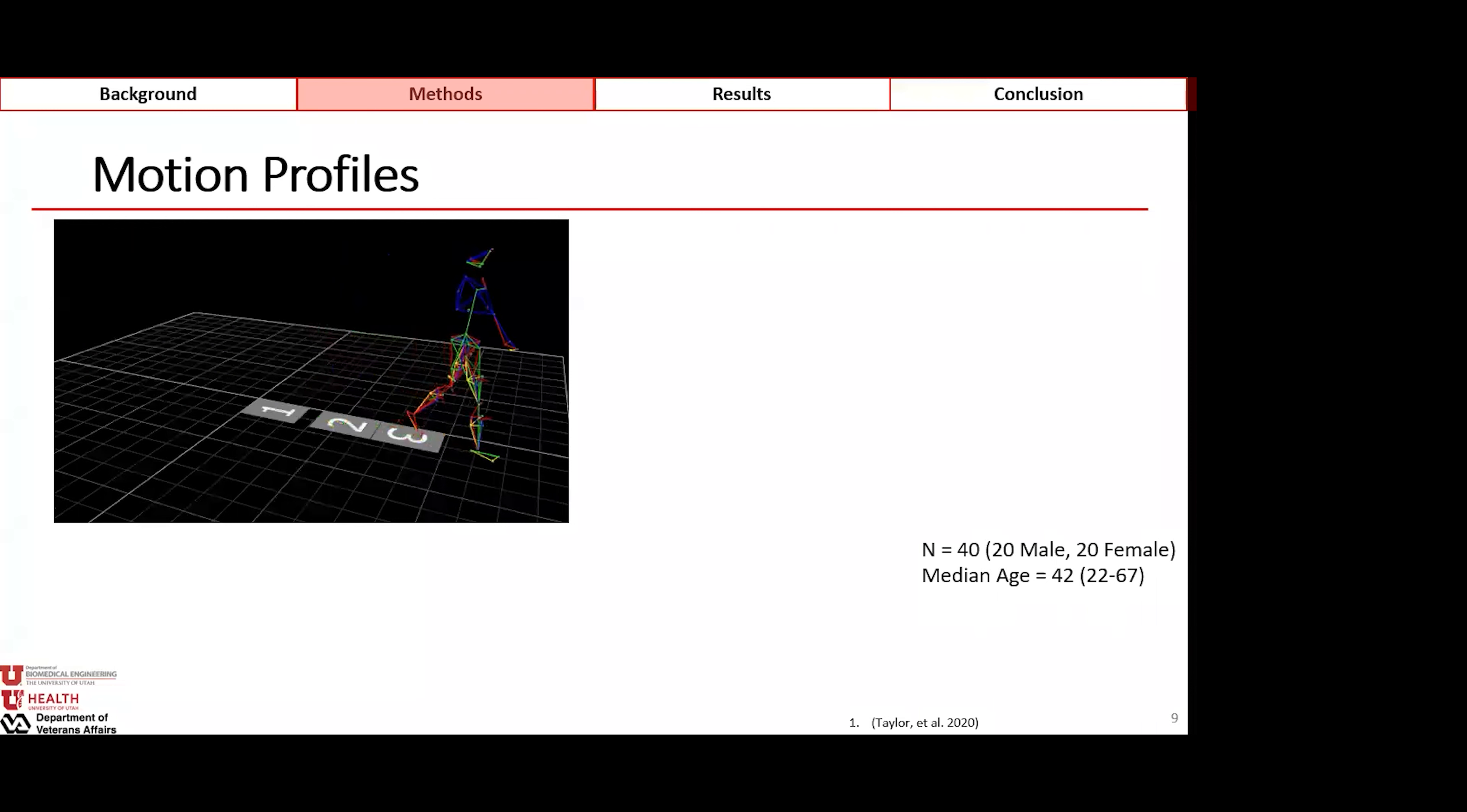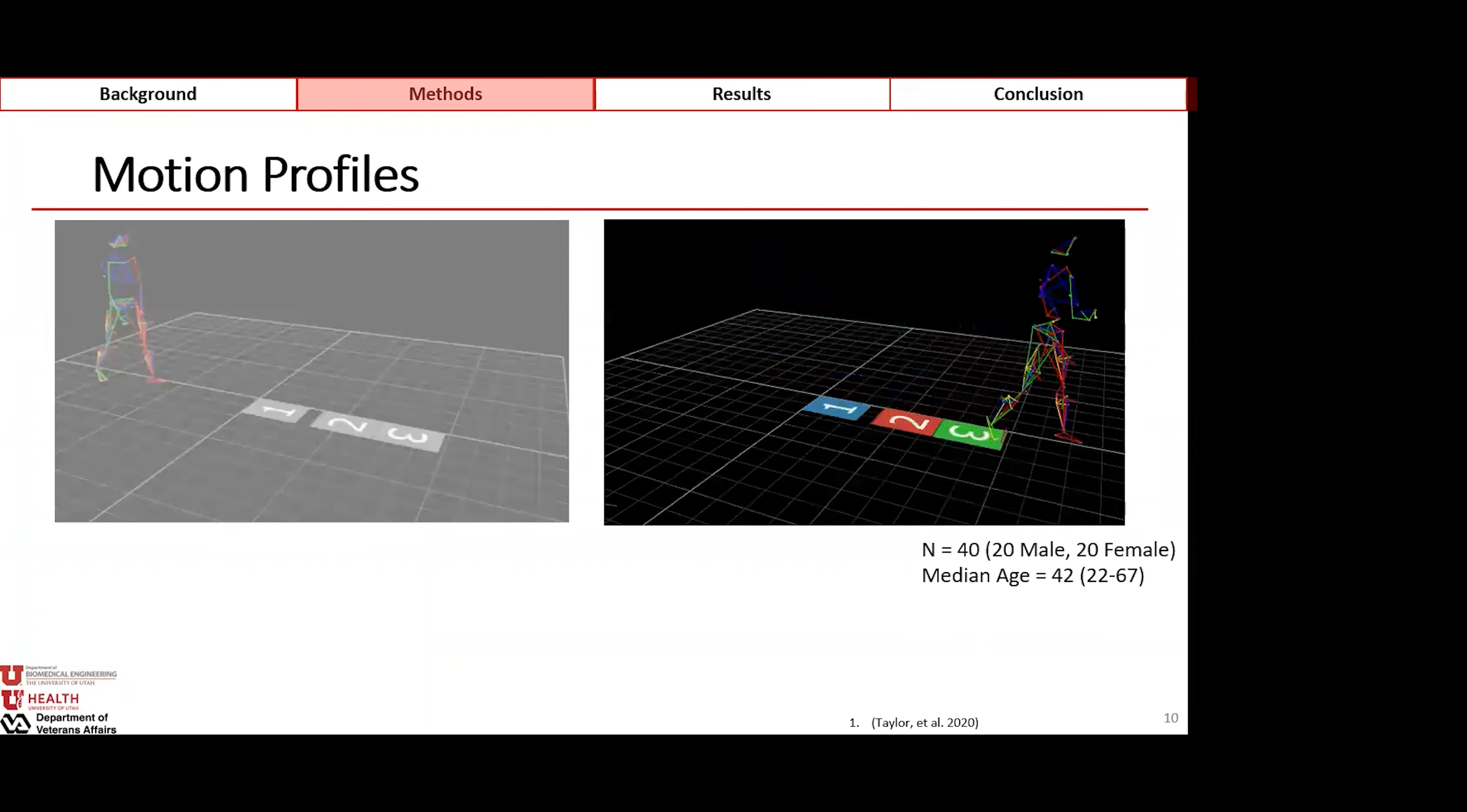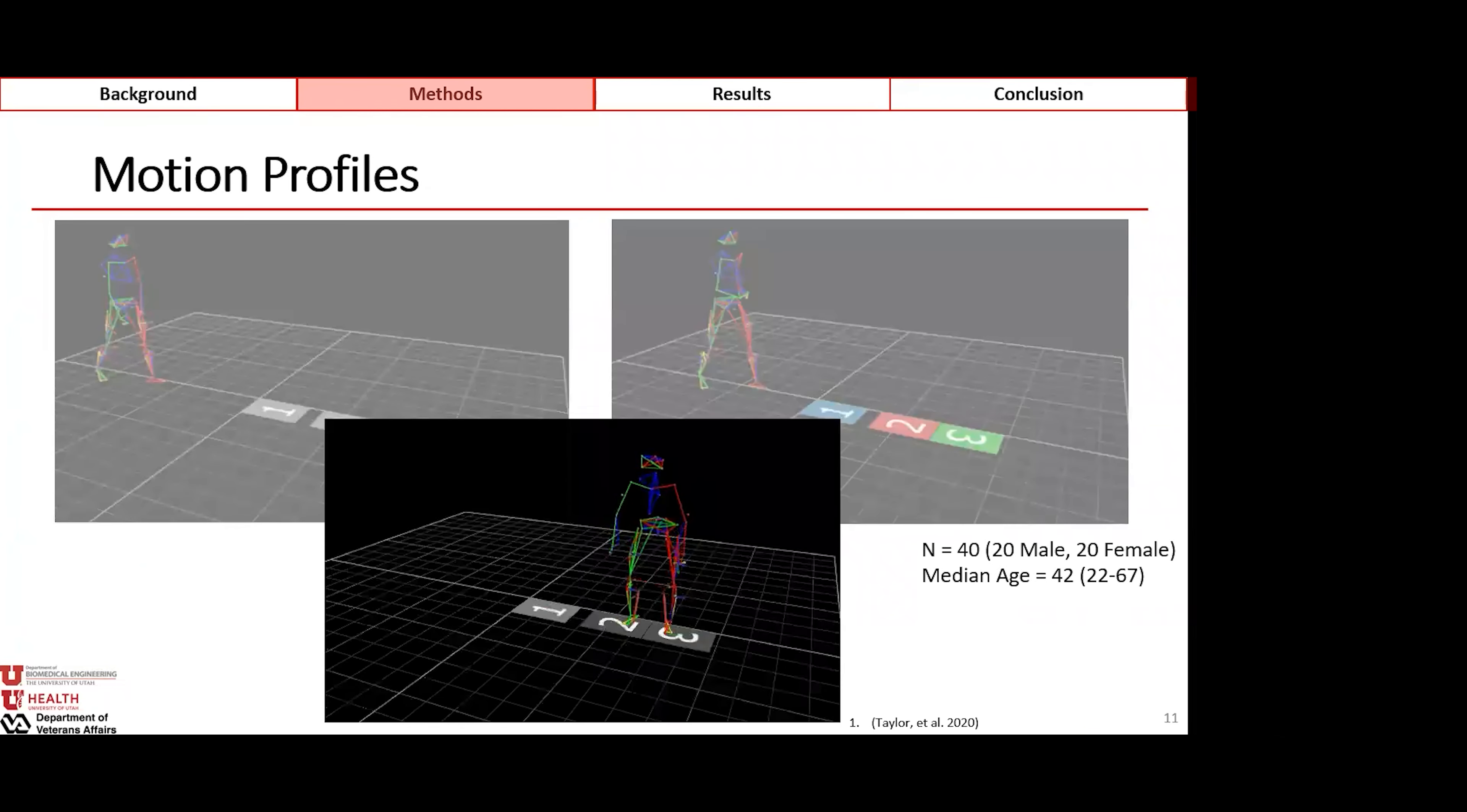We selected three motion profiles of varying intensity to cover the basis of sedentary and active amputees. We have a self-selected gait, a self-selected run, and a vertical jump as high as is comfortable to achieve. These were all completed by non-amputee individuals.